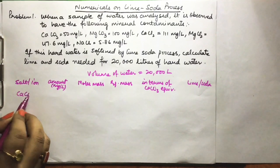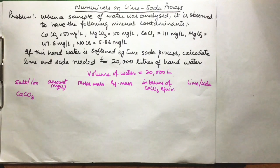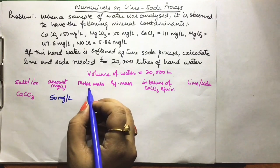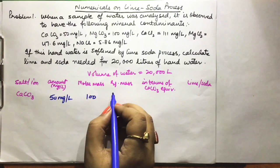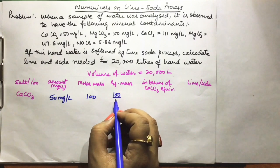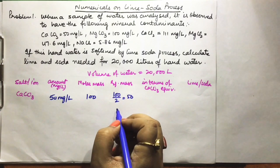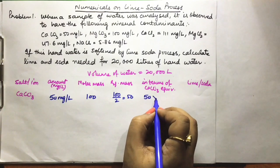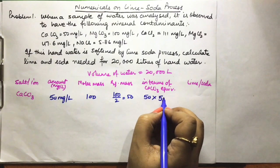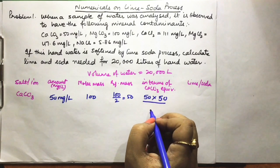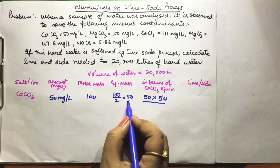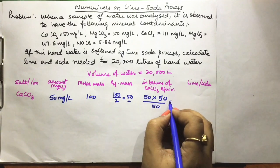First: CaCO3, amount 50 mg/L. Molar mass is 100, equivalent mass is 100/2 = 50 (valency factor 2). In terms of calcium carbonate equivalent: 50 × 50/50 = 50 mg/L. Next: MgCO3, amount 100 mg/L. Molecular mass 84, equivalent mass 84/2 = 42. Calcium carbonate equivalent: 100 × 50/42 = 119 mg/L.